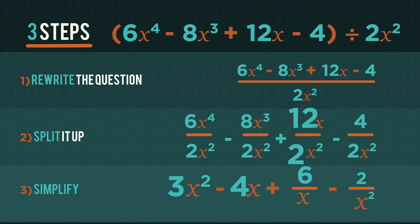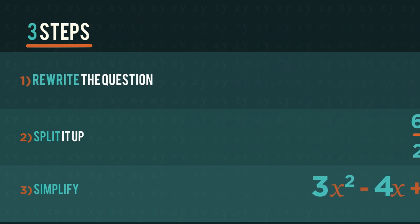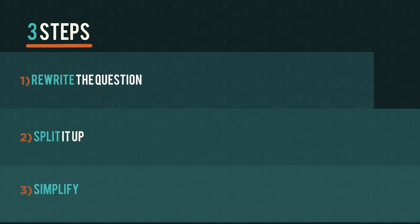12 divided by 2 to get 6, and x on top divided by x squared leaves an x on the bottom, and 4 divided by 2 to get 2 on top and the x squared stays on the bottom. So just take it step by step and you'll have no problems.